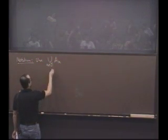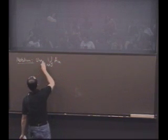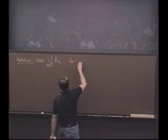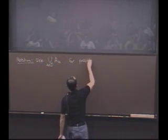So here, J is an index set. So what did it use? Use this for possibly uncountable collection.